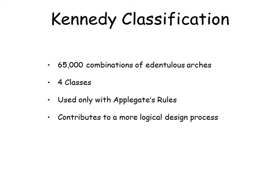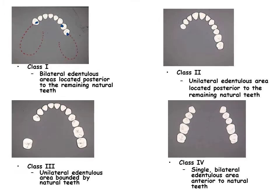The Kennedy classification uses Applegate's rules to simplify the design process. There are four Kennedy classifications. Class 1: bilaterally edentulous areas located posterior to the remaining natural teeth. Class 2: unilaterally edentulous area located posterior to the remaining natural teeth. Class 3: unilaterally edentulous area bounded by natural teeth. Class 4: a single, bilaterally edentulous area anterior to natural teeth.